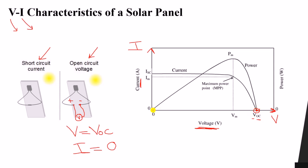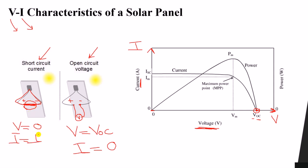The second test is the short circuit test. We connect the positive and negative terminals together. The voltage between these two terminals will be equal to zero because we have a short circuit. In this case the current will be at its maximum value, called I_sc, the short circuit current. So the second point on the graph has voltage equal to zero and current equal to I_sc.